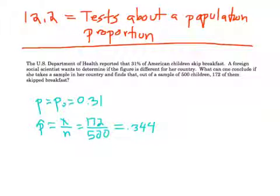Welcome back. This is a video for section 12.2, which our book calls tests about a population proportion. This is basically where we're doing a hypothesis test for one proportion.